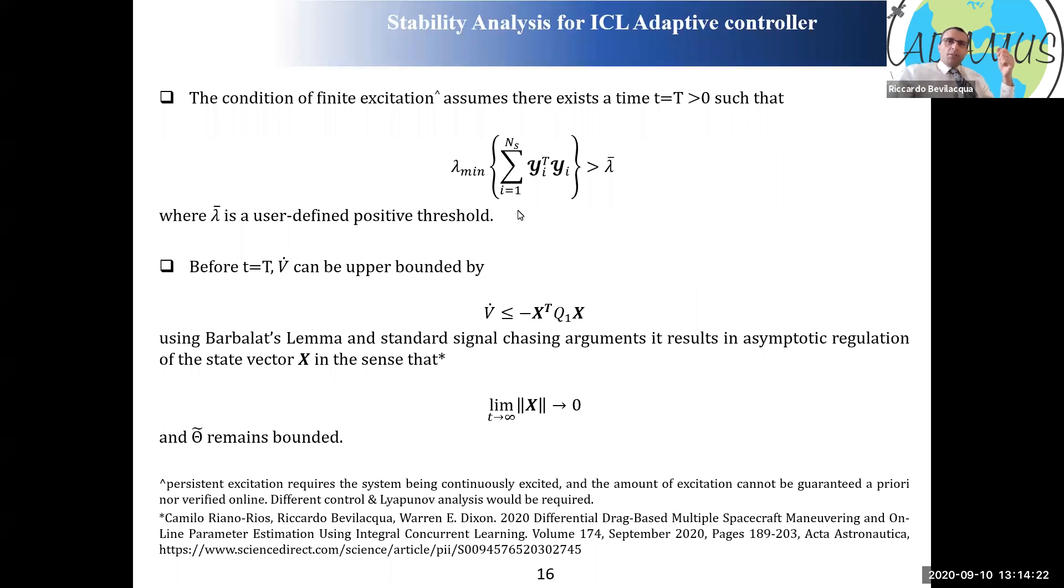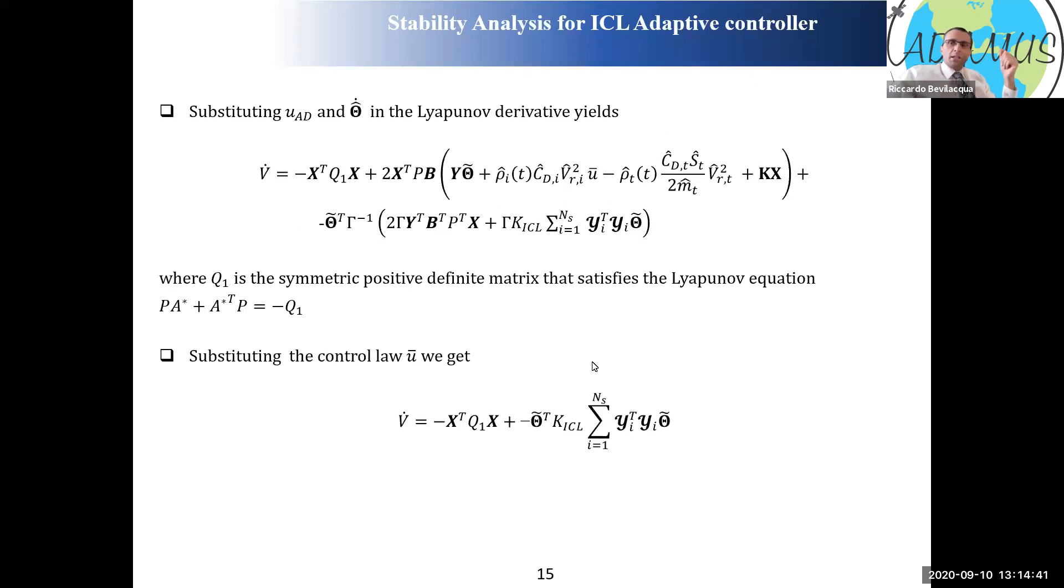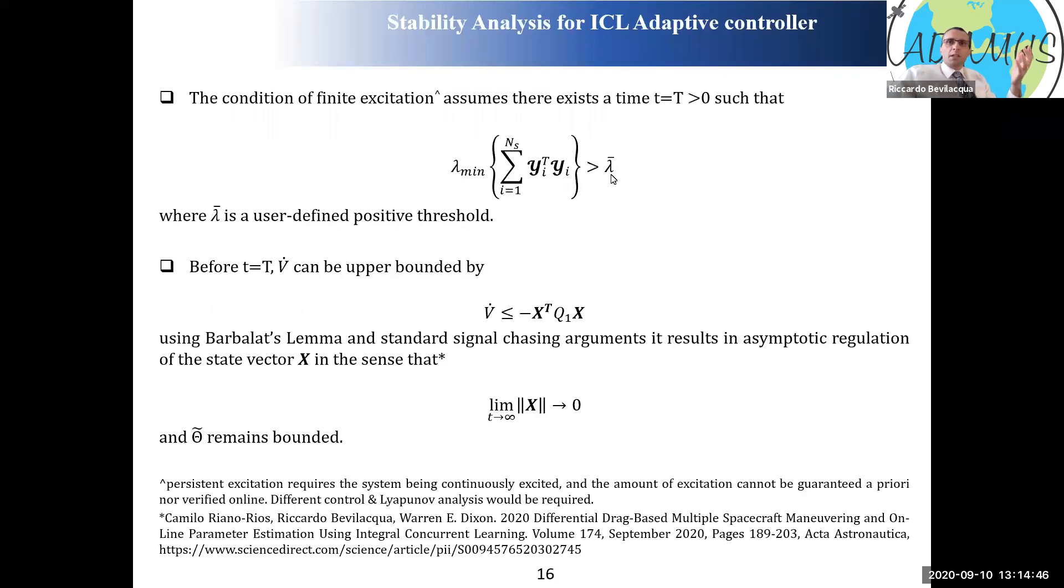There exists a time T, capital T, greater than zero, where at some point, if you define the threshold, just a constant that is positive, lambda bar, the minimum eigenvalue of this summation, this matrix basically, the matrix that appears in the second term of the Lyapunov function time derivative, is finally going to be greater than lambda bar. Before that time T, we cannot say much about this quantity. We can just say that we can upper bound it with zero.